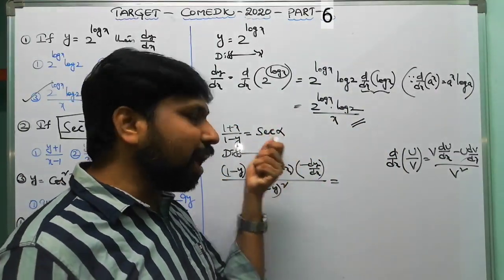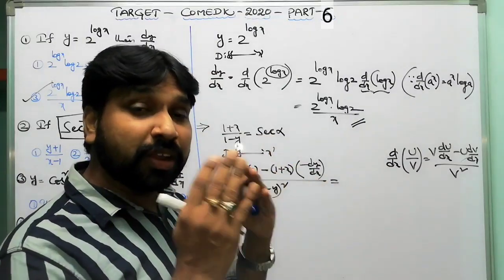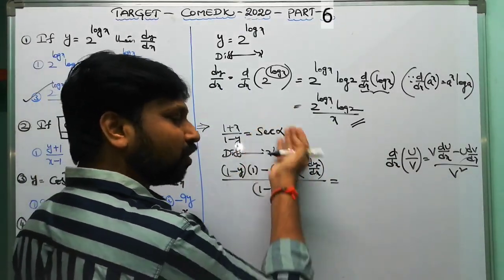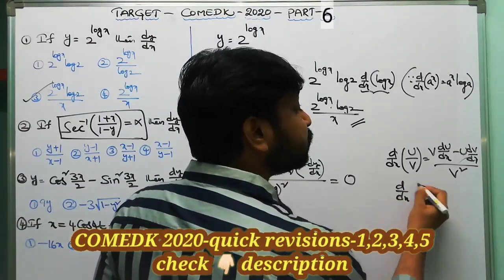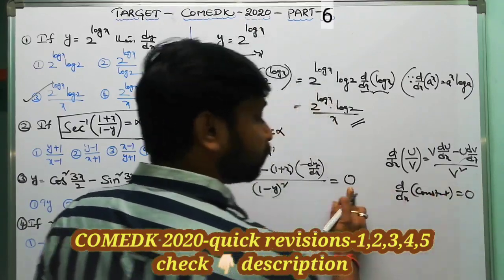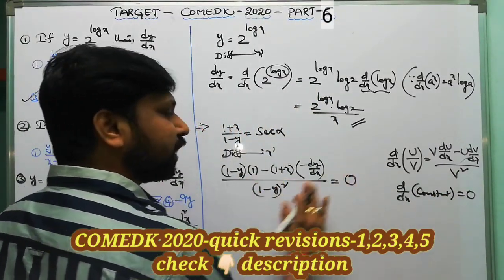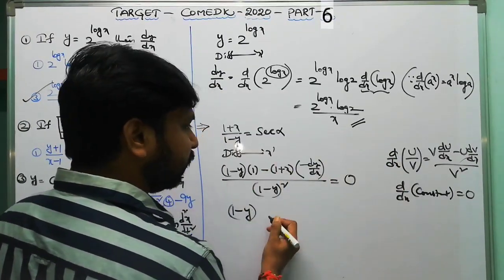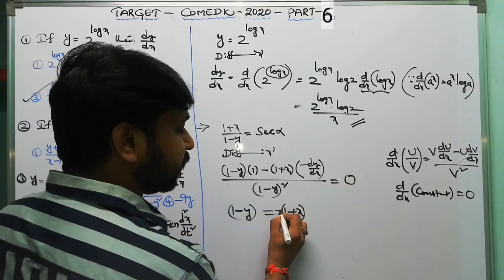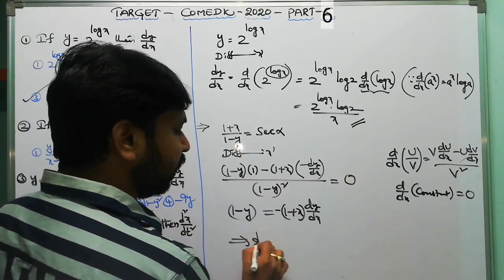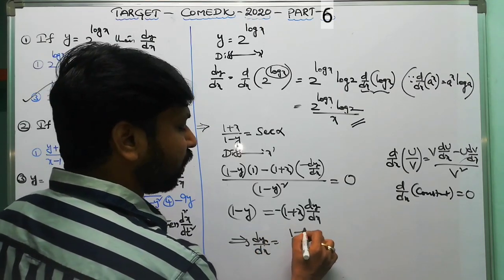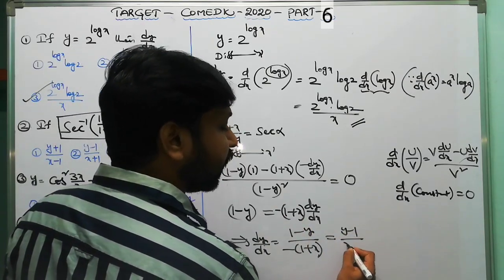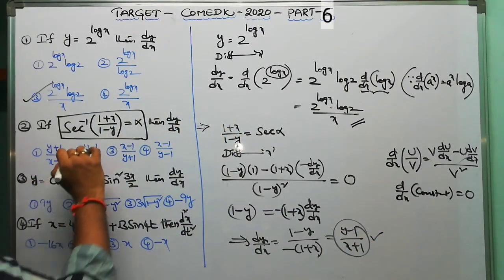Since α is a constant, the right-hand side derivative is 0. Rearranging, (1-y) · 1 plus (1+x) · (dy/dx) equals 0. Solving for dy/dx: dy/dx equals (1-y) / (−(1+x)), and taking the negative gives dy/dx equals (y−1)/(x+1). This is your answer — option 2 is correct.